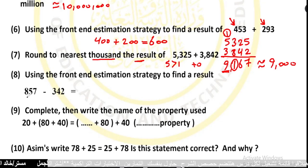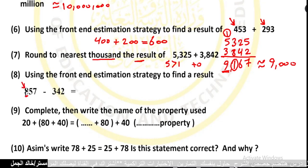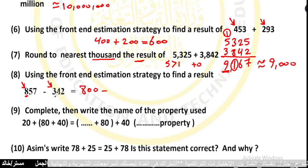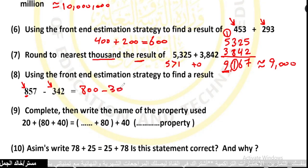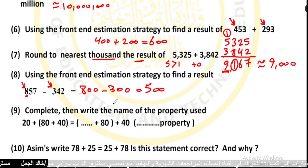Number 8: using the front-end estimation strategy. The value of 8 in the hundreds place is 800. Minus 3 in the hundreds place, its value is 300. So 800 minus 300 equals 500.